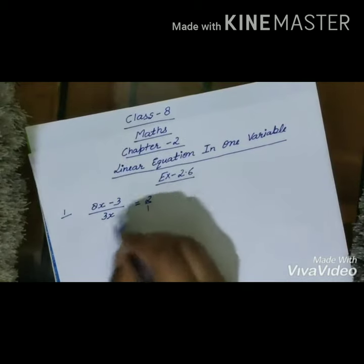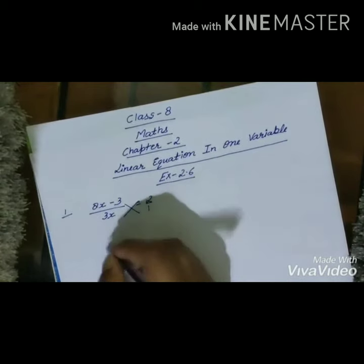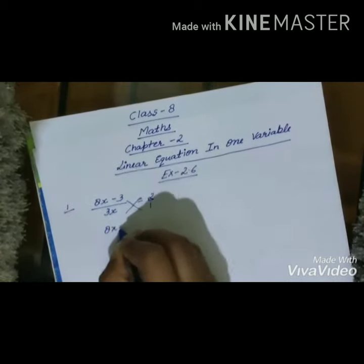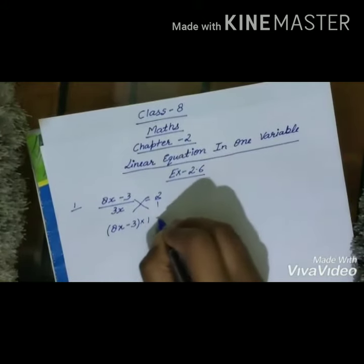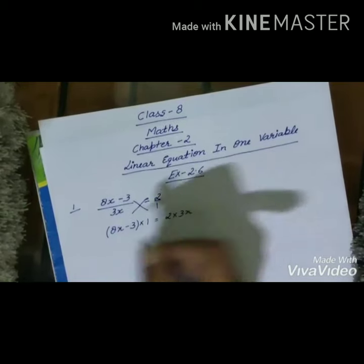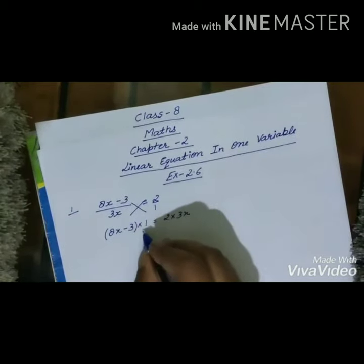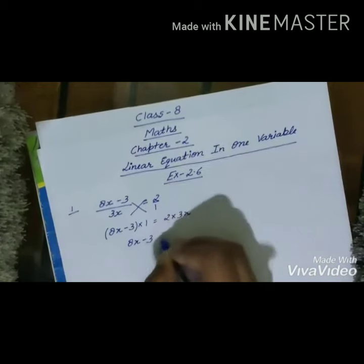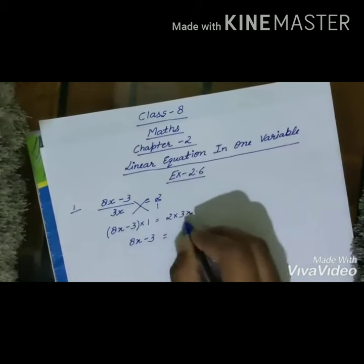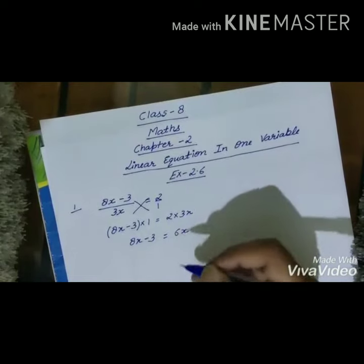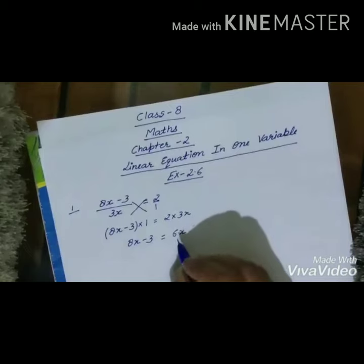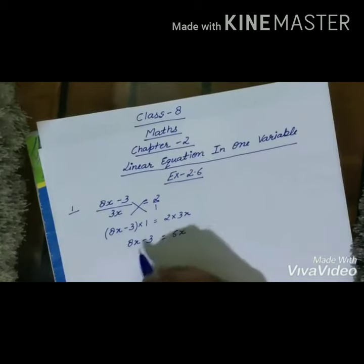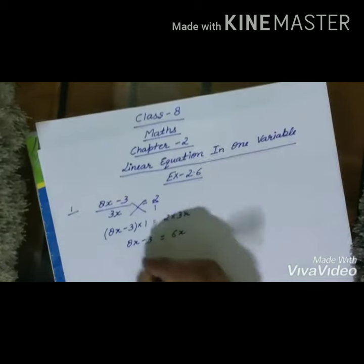After cross multiplication, we will get (8x - 3) multiplied by 1 is equal to 2 multiplied by 3x. We know that a × 1 = a. So 8x - 3 multiplied by 1 is equal to 8x - 3, and 2 × 3x is equal to 6x. Now we need to separate variables and constants.